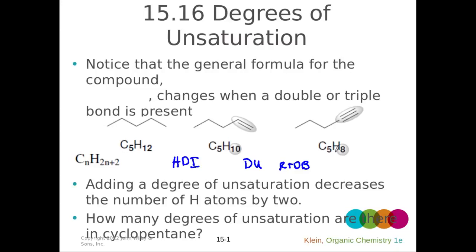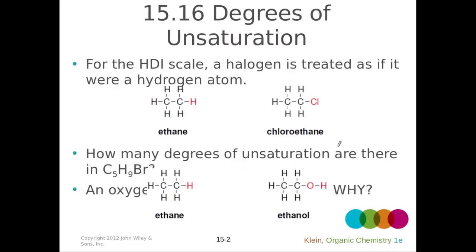And that's the case here. Relative to the fully saturated pentane, we're missing four hydrogens. So instead of 12, we have eight. So our degrees of unsaturation is two. For every two hydrogens we're missing, we have one degree of unsaturation.